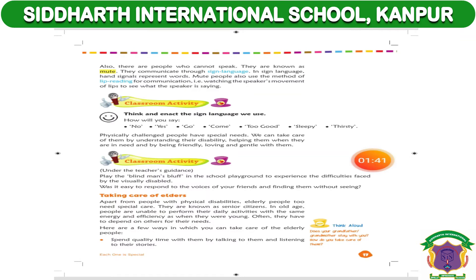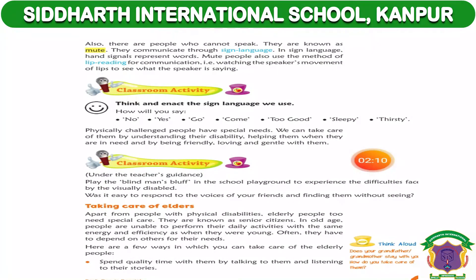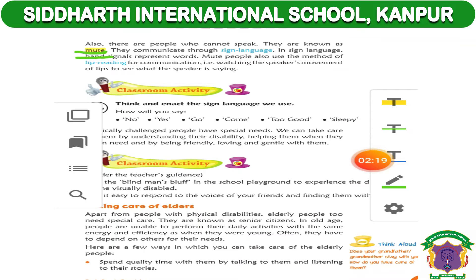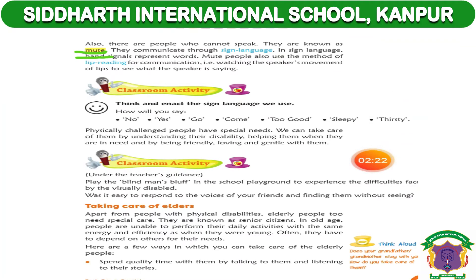Children, those people are the ones who cannot speak. What are they known as? They are known as mute. People who cannot speak — unko hum mute kehte hain. I have underlined it for you: mute.